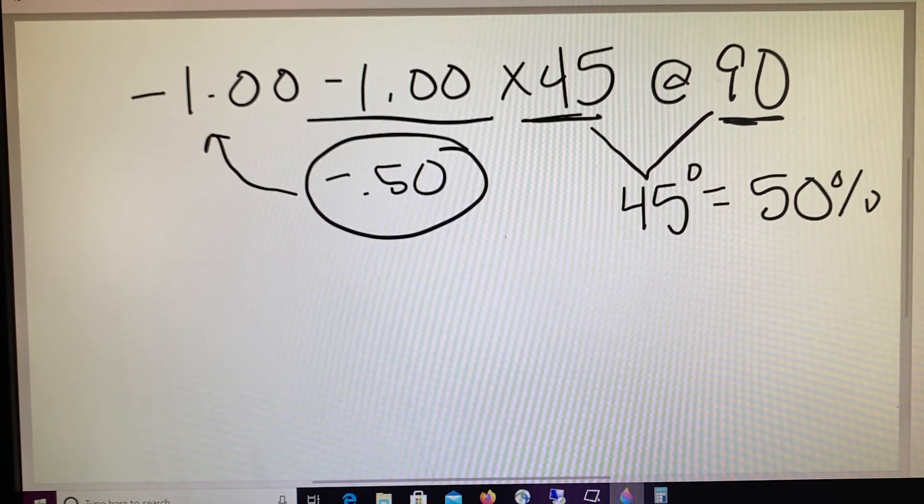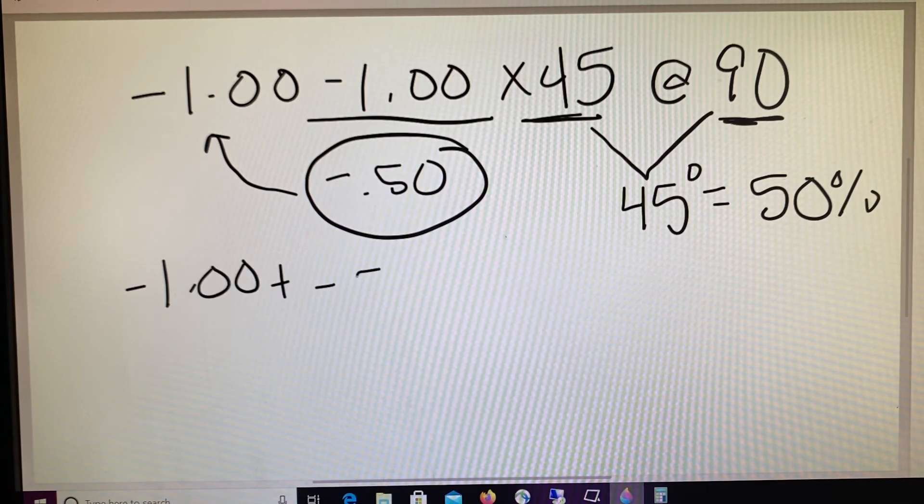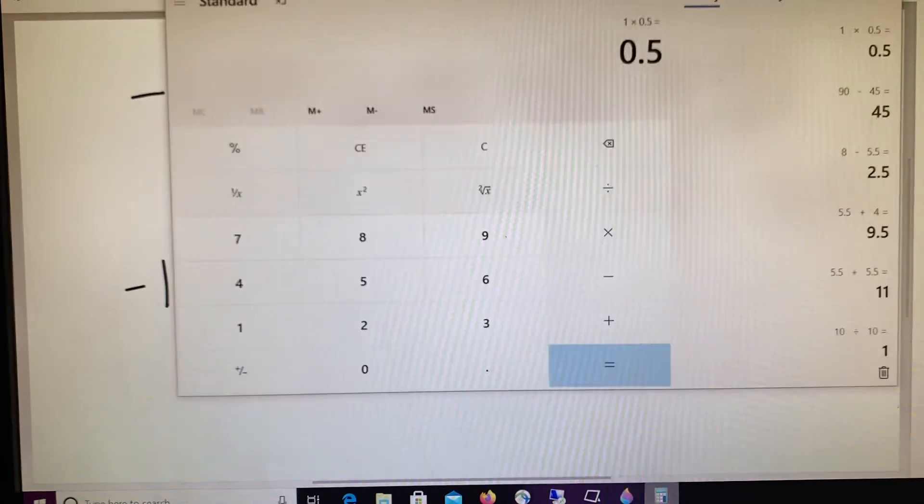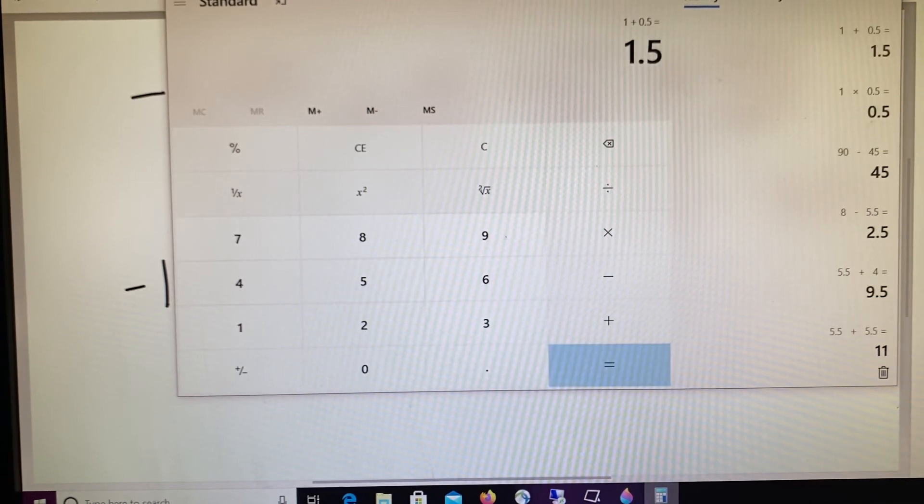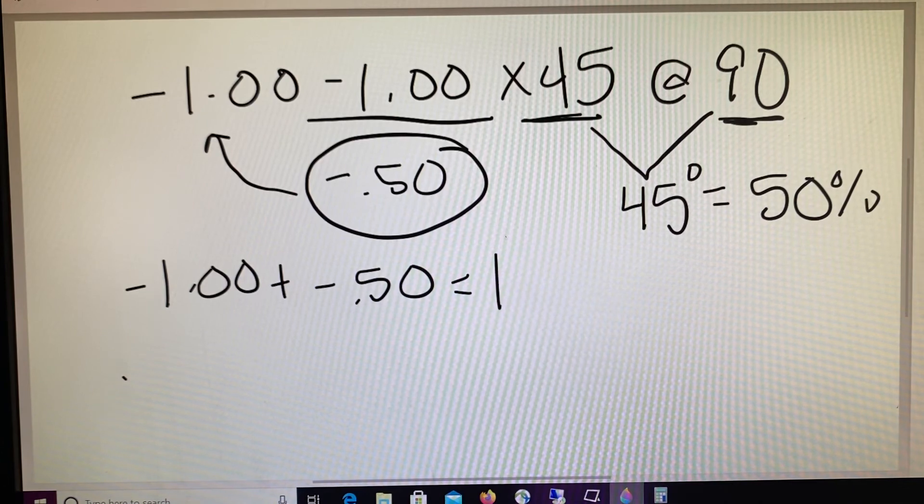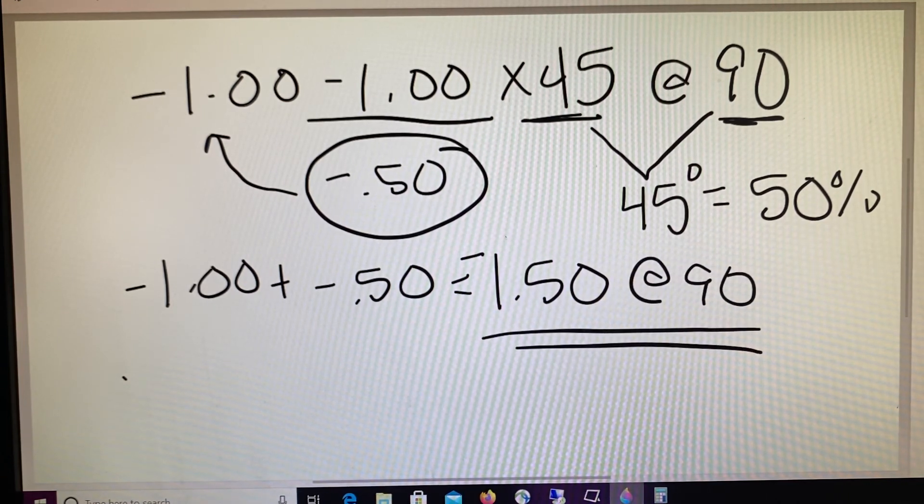And then we're adding that to the sphere. So if I had a minus one plus a minus a half, that's going to equal, again, grab that calculator, one plus half equals one and a half. So 1.5. And everything's minus, so we know it's a minus 150.